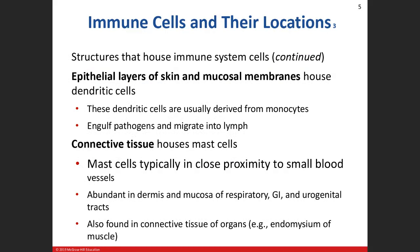The biggest structure — obviously the largest organ in your body — is your skin. So we talk about the epithelial layers of the skin, we're talking about the epidermis, and then the mucosal membranes. These two structures — your skin and the mucosal membranes — pretty much cover your entire body, because mucosal membranes are found in areas that are entrances into your body and exits of the body.